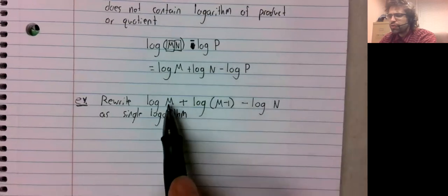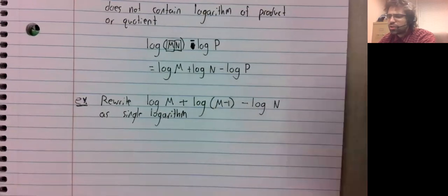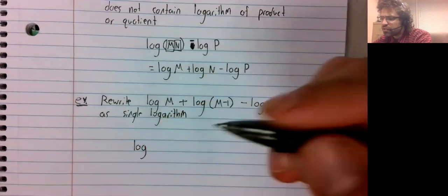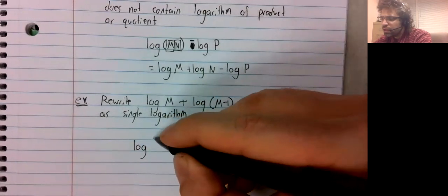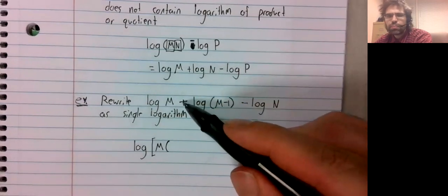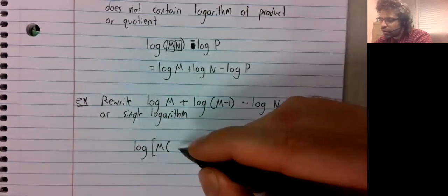We'll just go from left to right, collapsing these things as we go. So we start with a sum of logarithms.